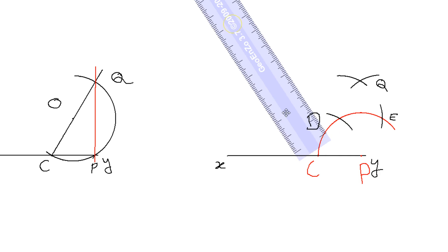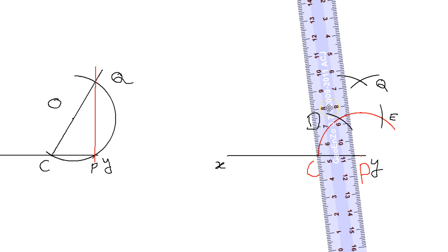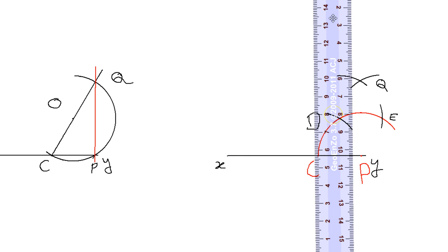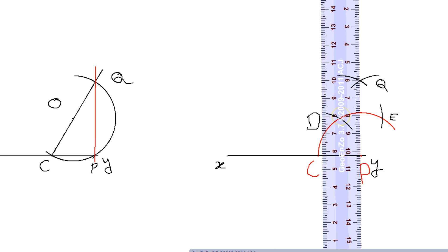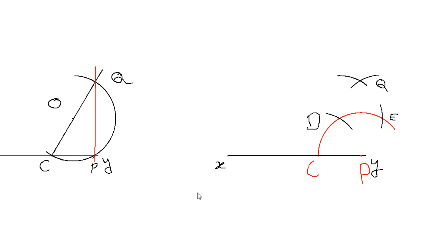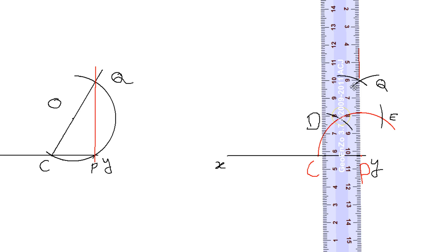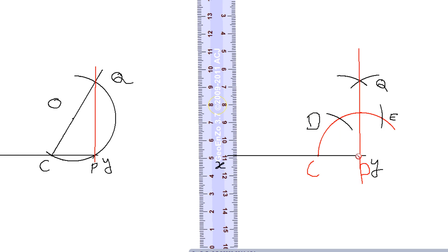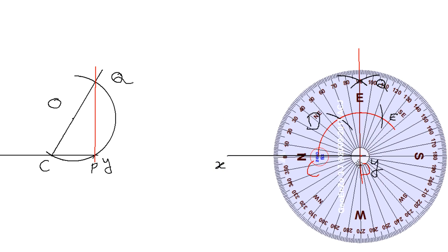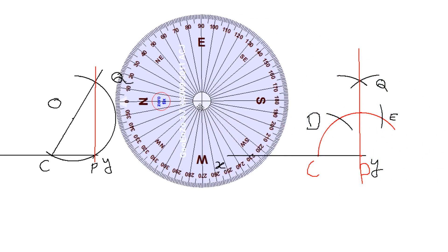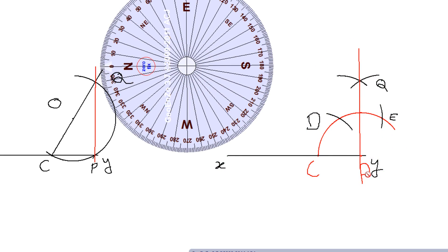Take the scale and connect point P and Q. This line PQ will be the desired perpendicular. I'll use the red color to make it distinguishable — connecting line PQ. Now if you want to check it, take the set square and put it at point P — it is exactly giving 90 degrees. So this is another method by which I have drawn the perpendicular at a point close to the end of line XY.